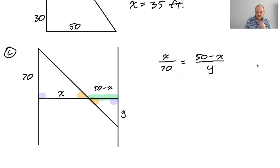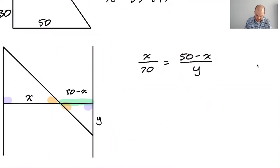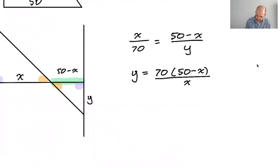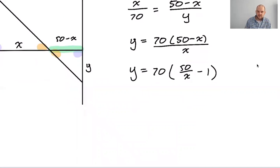I think that X over 70 is gonna be equal to 50 minus X over Y, and then the question is what's dy/dt. So I'm gonna rearrange this before I find a derivative, because right now it looks pretty bad. So I'm gonna say that Y is equal to 70 times 50 minus X over X, then I feel like you can make your life easier by expanding this. So I'm gonna leave the 70, but I'm gonna make it 50 over X minus 1, that I feel like I don't mind taking the derivative of that.